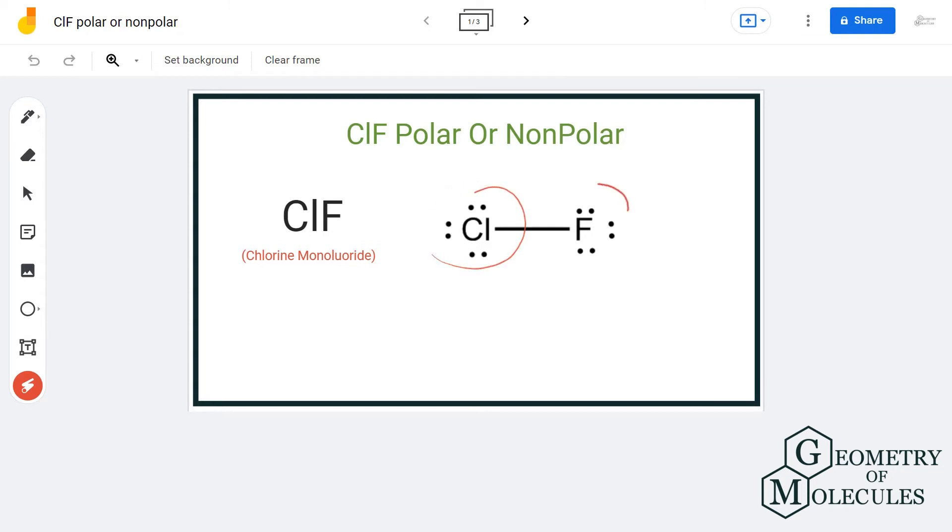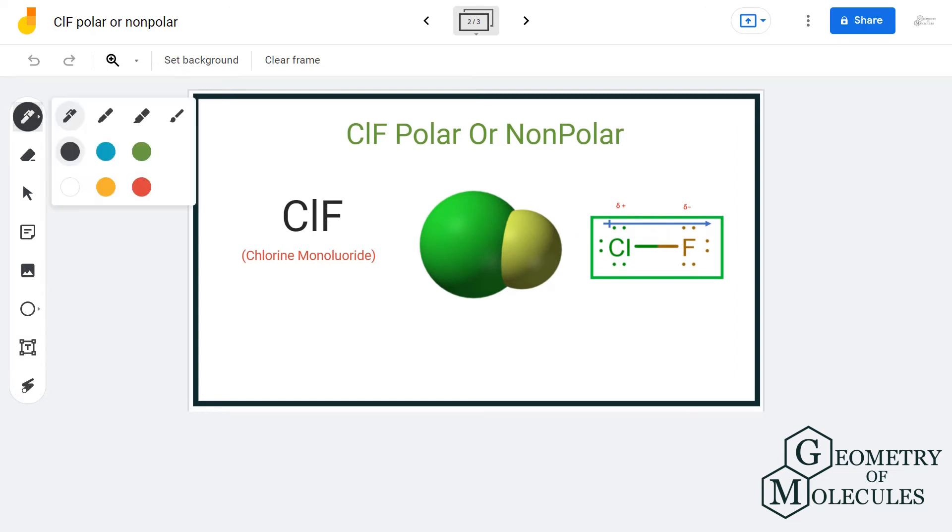The Lewis structure for this molecule is quite simple because it has one chlorine atom forming a bond with one fluorine atom. Its linear structure might give you an idea that this is a nonpolar molecule, but wait—we shall first look at the electronegativity values of both chlorine and fluorine atoms.